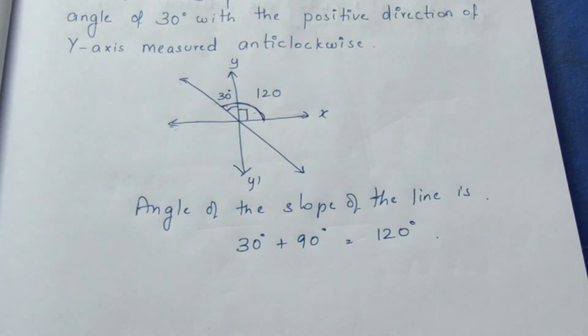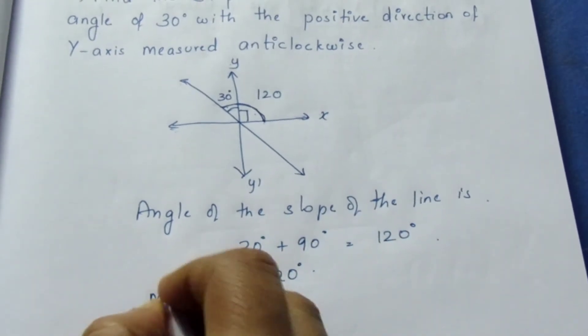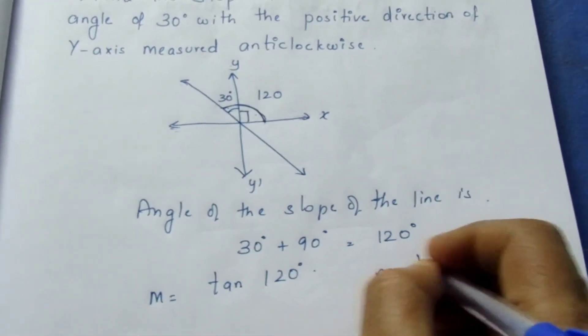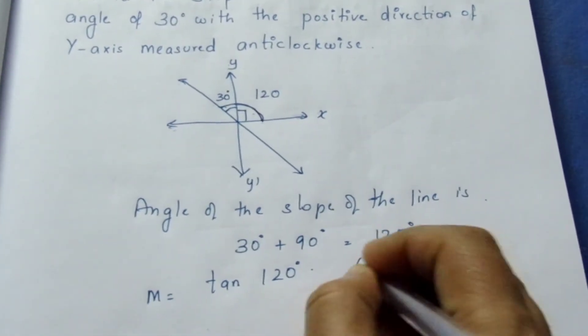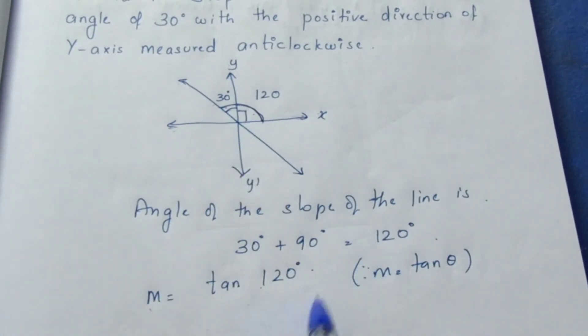Now we need to find tan 120 degree because we know that m is equal to tan theta. The formula is m equals tan theta. Here m is equal to tan 120.